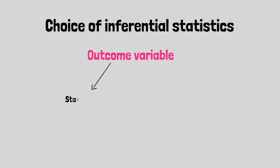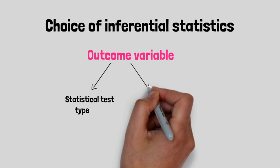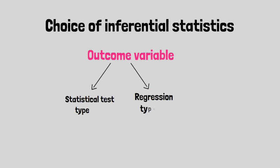The type of outcome variable helps to decide which particular statistical test or specific type of regression can be applied. A statistical test, for example, could be t-test, z-test, chi-square test, or ANOVA test.